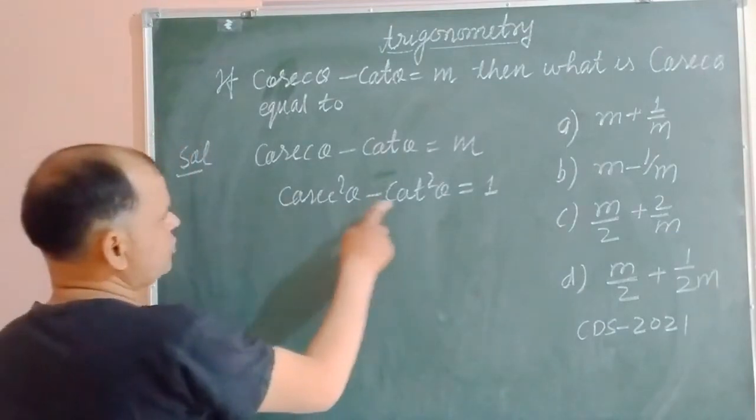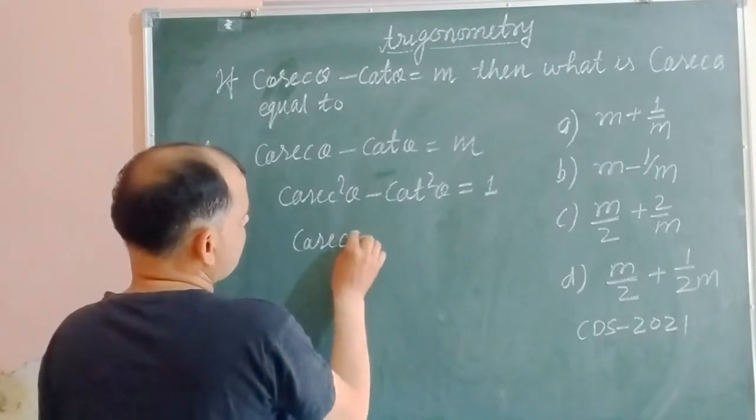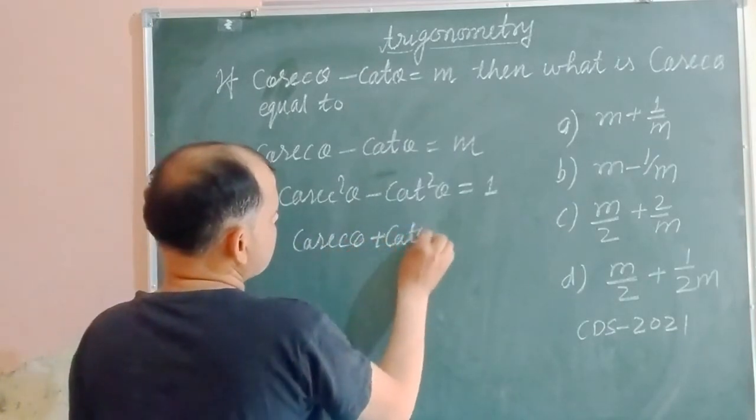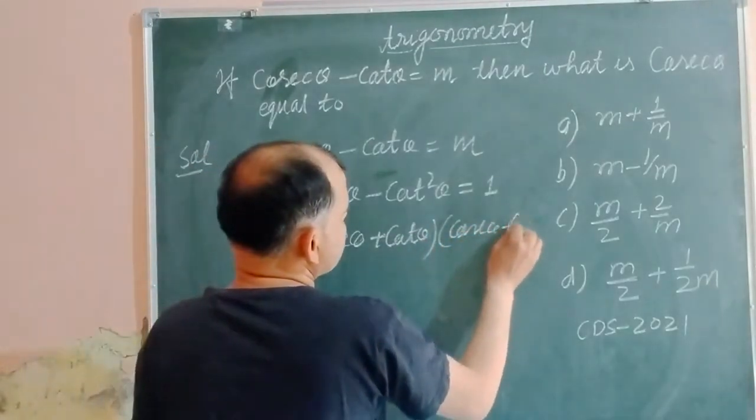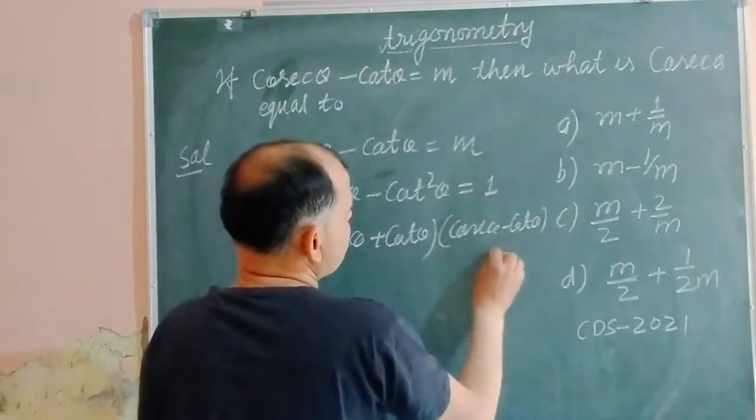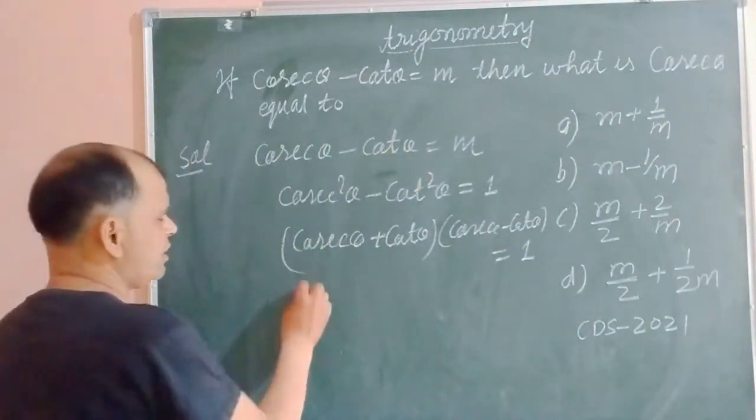So we use a square minus b square and factor it: cosec theta plus cot theta into cosec theta minus cot theta equal to 1. Now we put the value of cosec theta minus cot theta which is m.